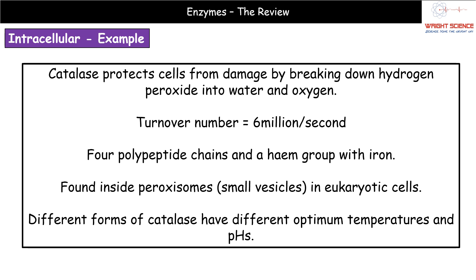A specific example of an intracellular enzyme is catalase — we know it's an enzyme because it ends in '-ase'. Catalase is incredibly important because it breaks down hydrogen peroxide, which is produced inside our cells and is quite toxic. Breaking it down produces just water and oxygen — harmless products. Catalase increases the rate of that reaction, and it does this very quickly: its turnover number is six million reactions per second per catalase molecule, meaning we're rapidly protecting ourselves from the damaging effects of hydrogen peroxide.